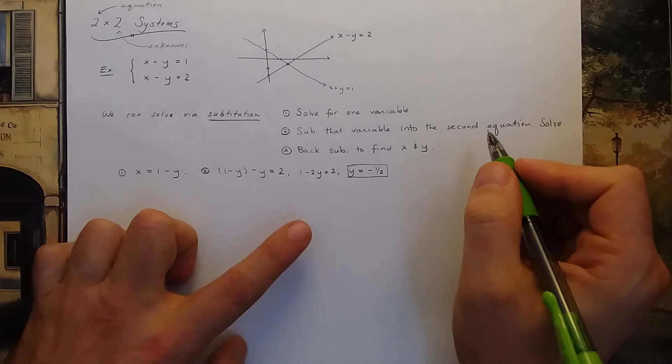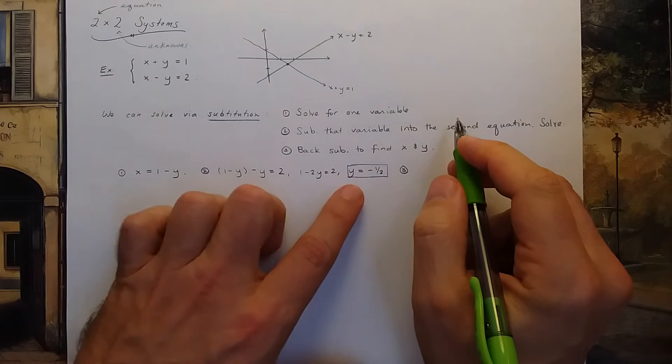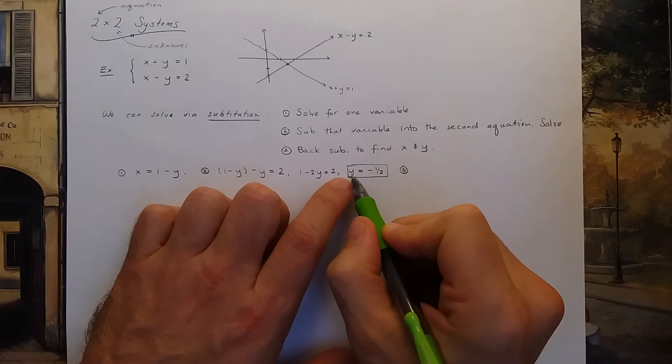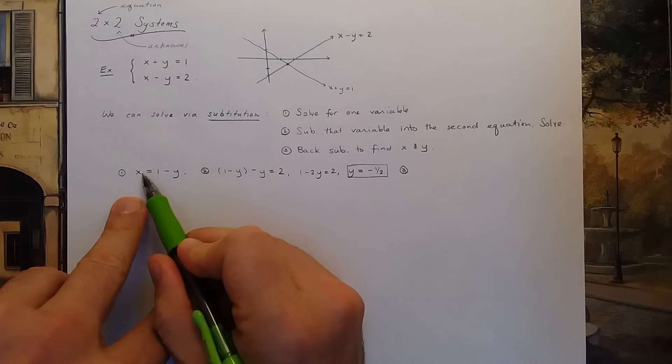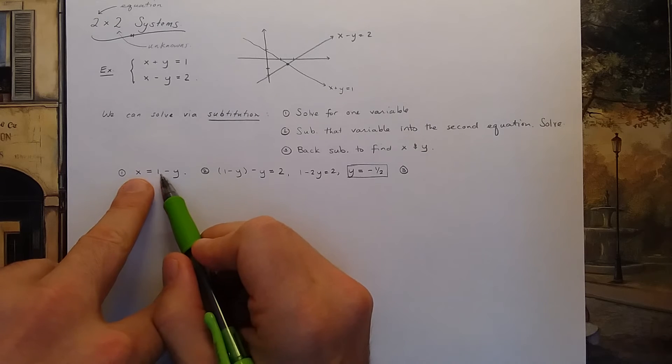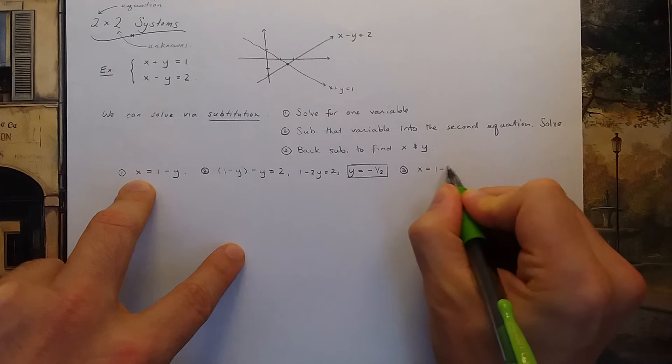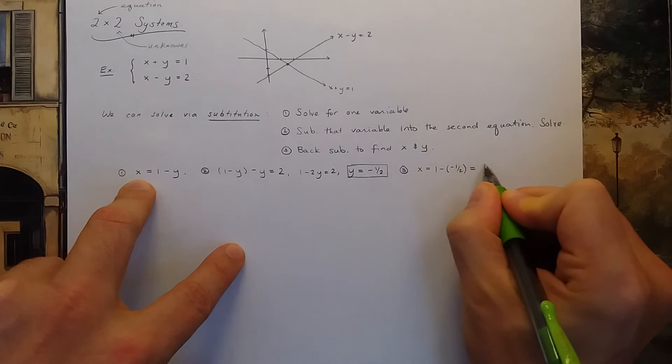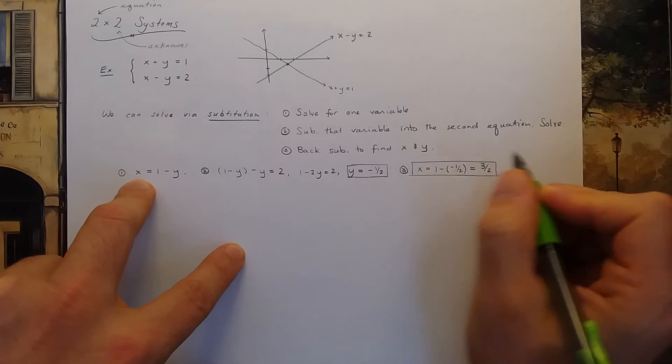So I'm halfway done. I need to know both x and y. In step 3, you could find x by back substituting. Now what I mean by that is you take this solution you found for y, and you back substitute it back into the equation in step 1. So now I know that x is equal to 1 minus negative 1 half, which would be 3 halves.